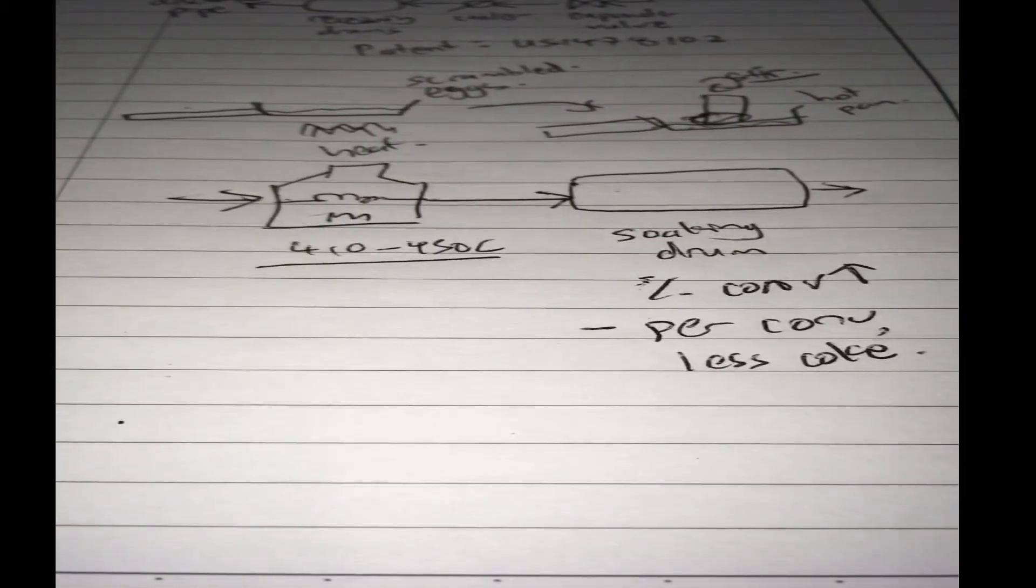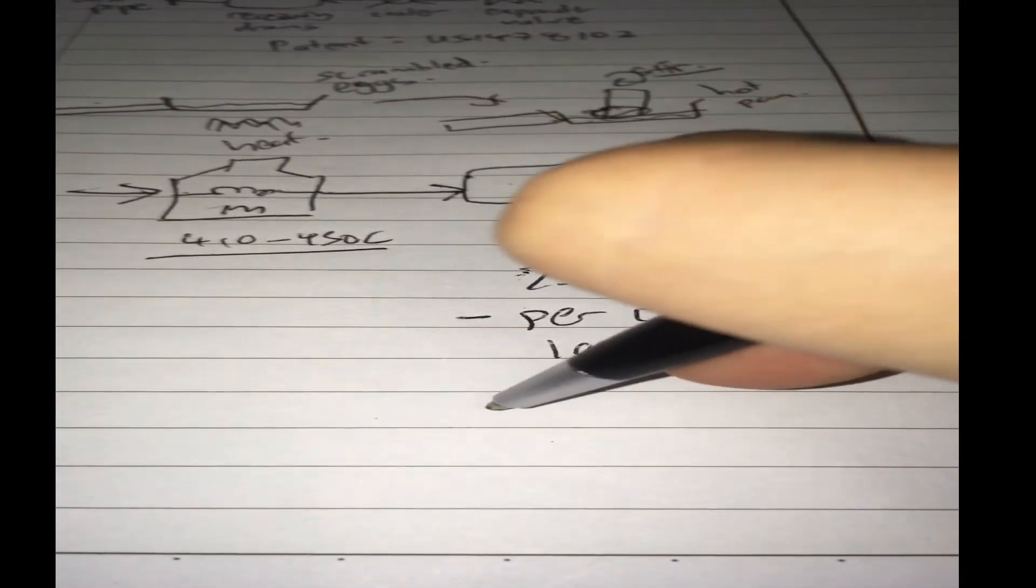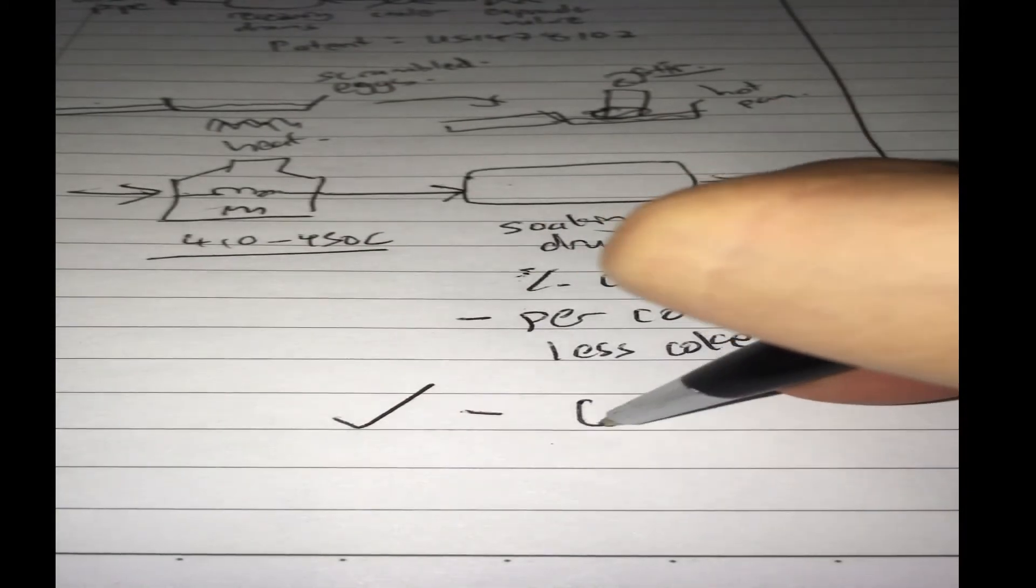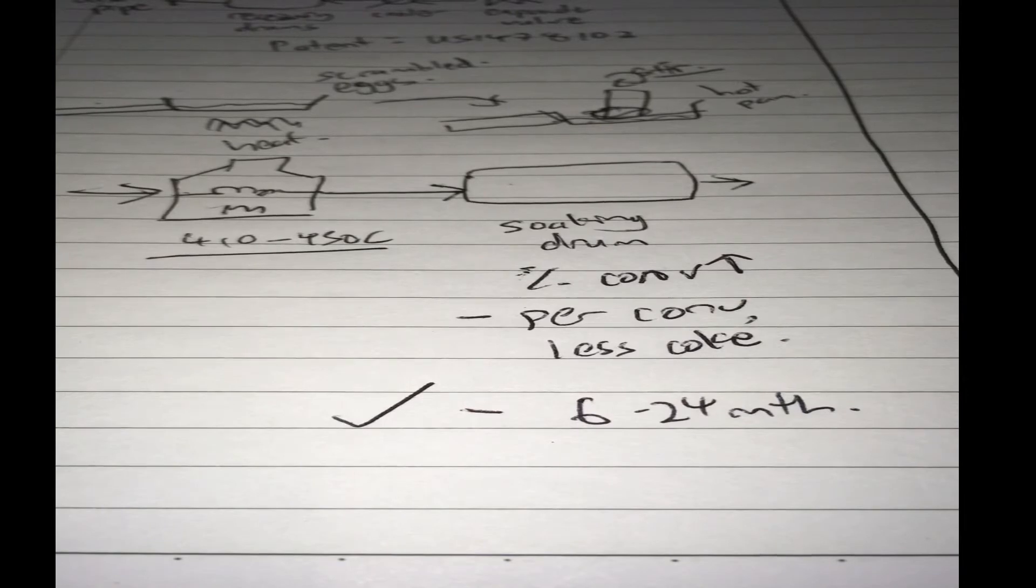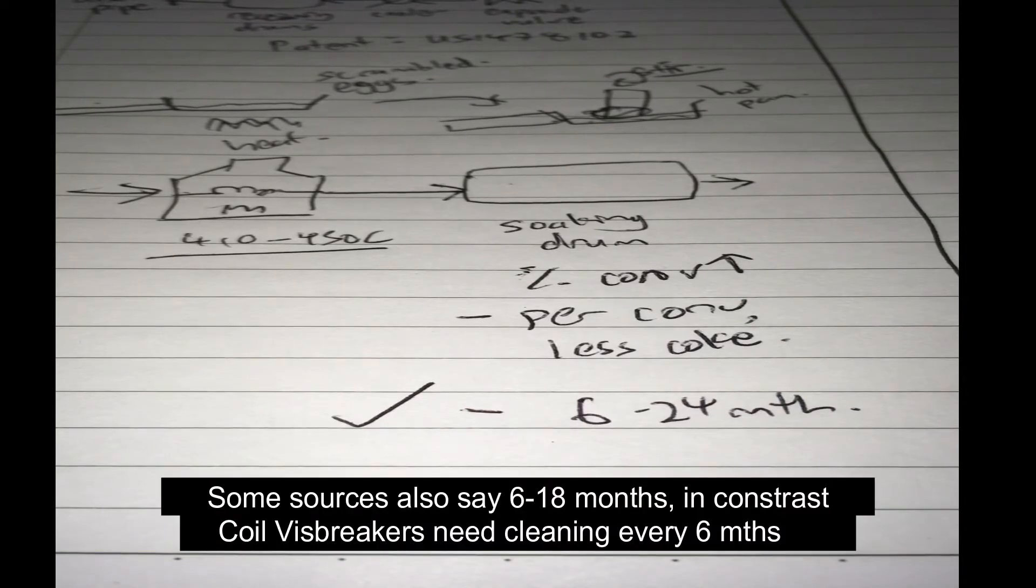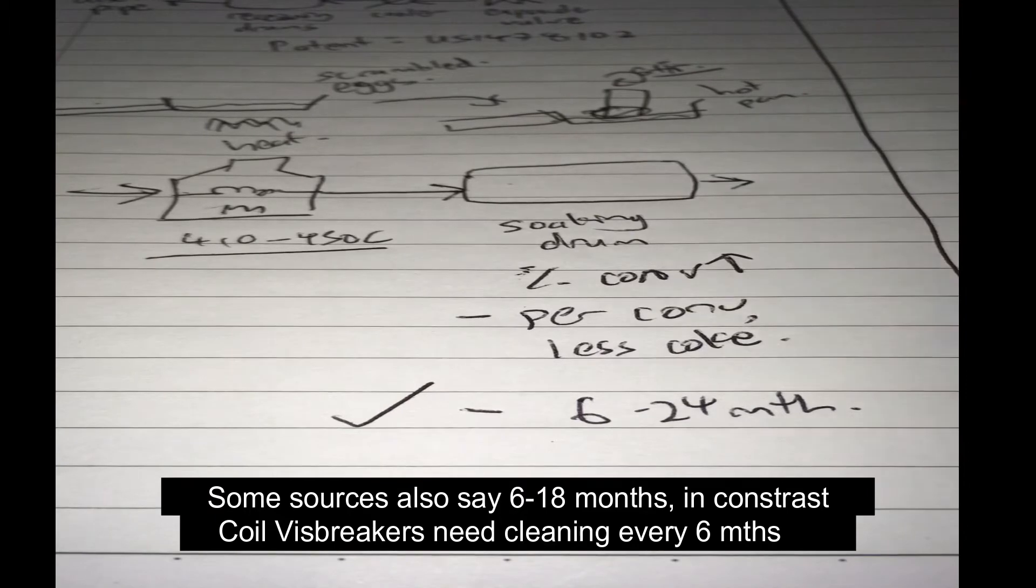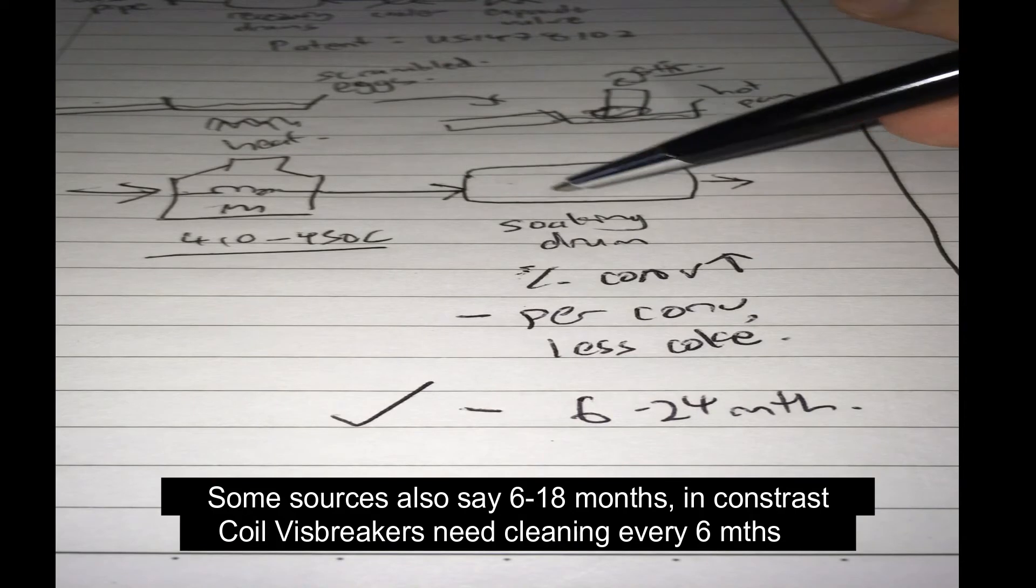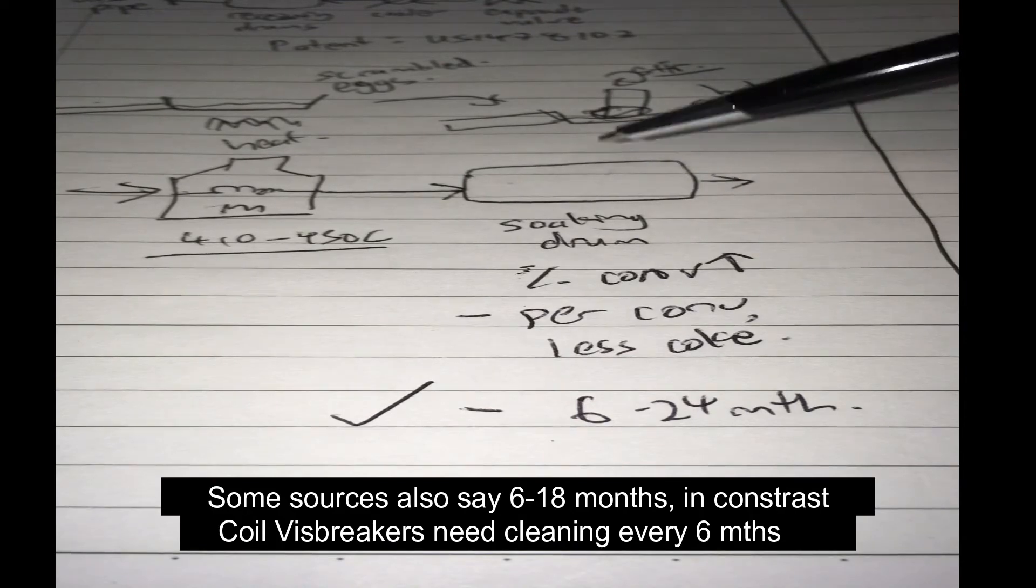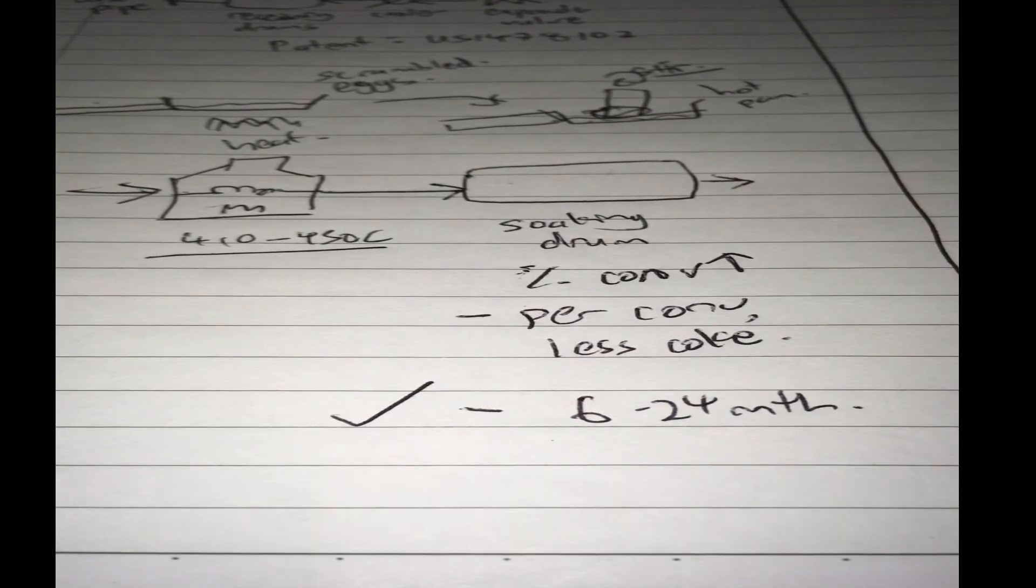Now for this, there's an advantage and disadvantage of using a soaker. For the advantage, you can keep the soaker visbreaker up and running for about 6 to 24 months before cleaning, maybe a bit longer depending. The amount of coke that you form in the soaking drum is a lot less due to the above mentioned reasons. They don't overcrack the oil.